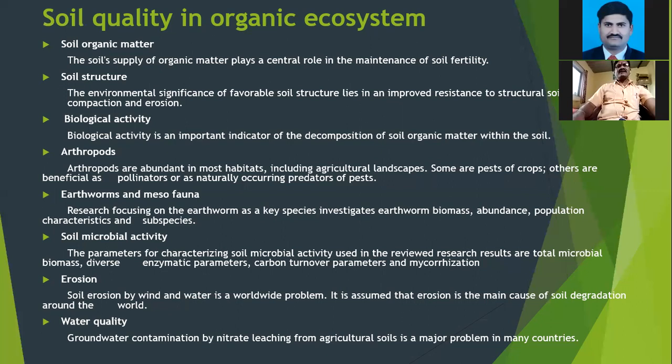Soil erosion by water is a worldwide problem; it is assumed to be the main cause of soil degradation around the world, and it can be reduced through the organic ecosystem. Regarding water quality, groundwater contamination by nitrate leaching from agricultural soil is a major problem in many countries, causing soil degradation and poor water quality. Water quality can be checked and improved through the organic ecosystem.